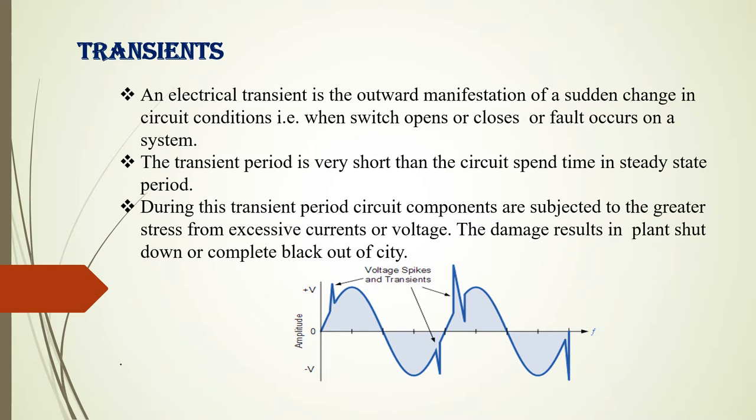During the transient period, circuit components are subjected to greater stress from excessive currents or voltages. The damage can result in a plant shutdown or a complete blackout of the city. You can see in this diagram the voltage spikes and transients. These transients occur only for a short duration, but they must be considered seriously in electrical systems.